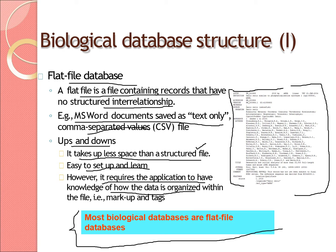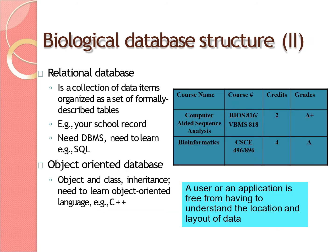Moving on to relational databases: a relational database is a collection of data items organized as a set of formally described tables. You may have used SQL and other database software when learning database management systems — relational databases are related to that. Object-oriented databases involve object and class inheritance and require learning an object-oriented language such as C++.